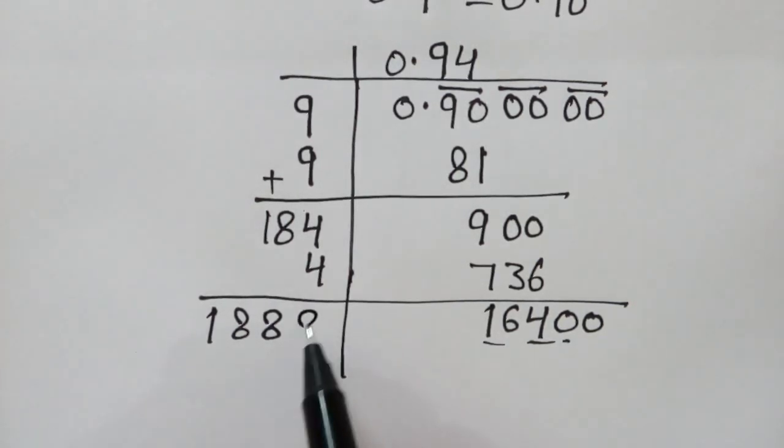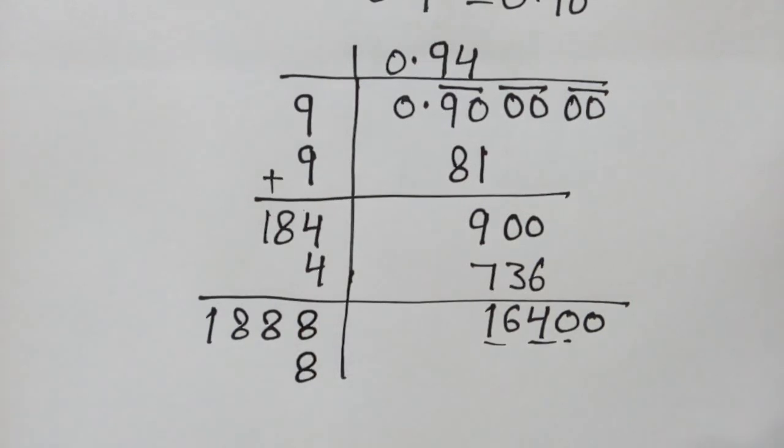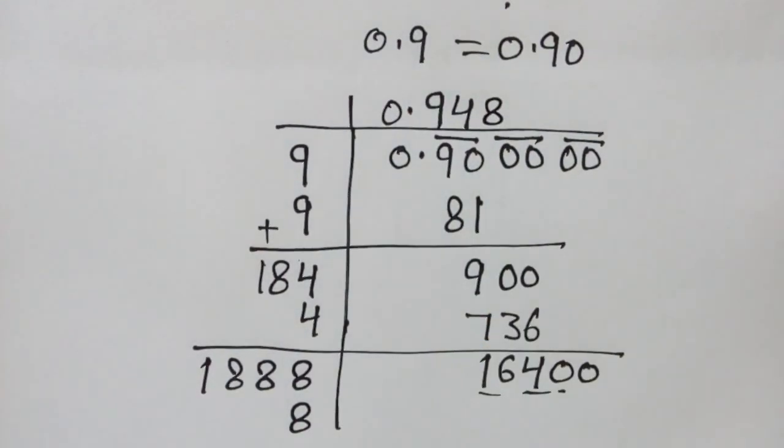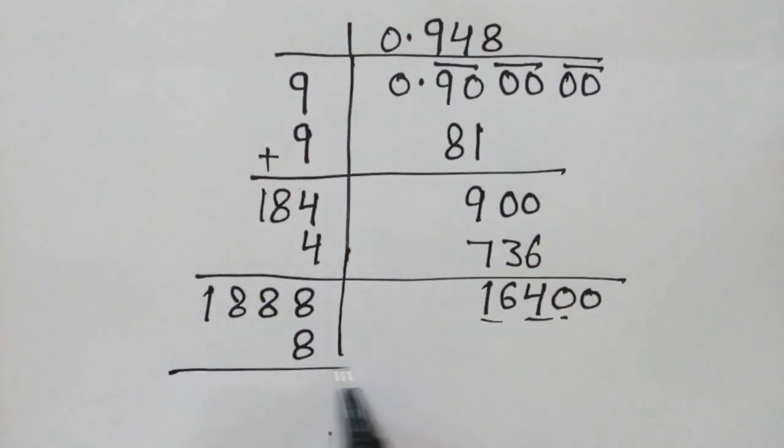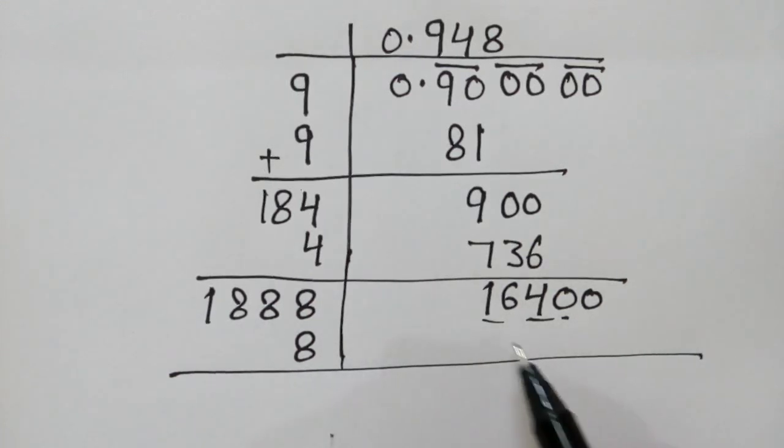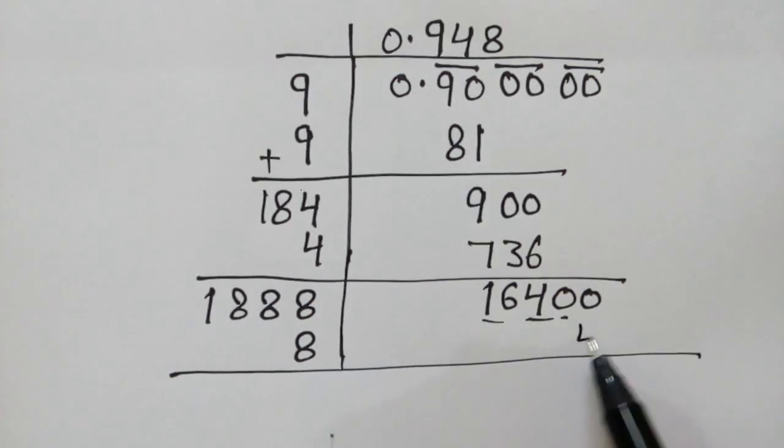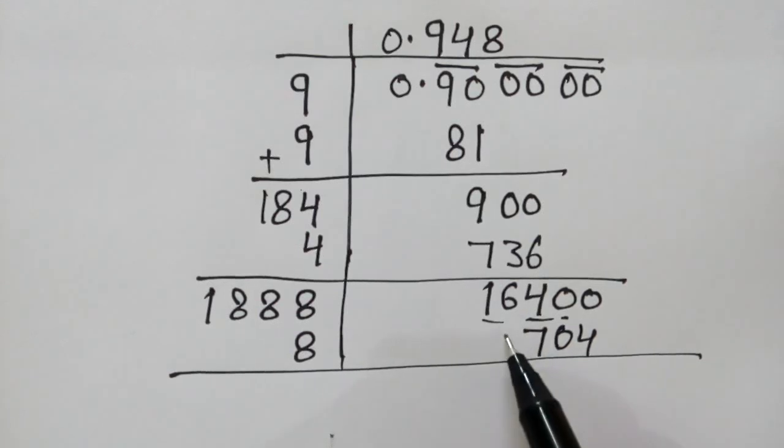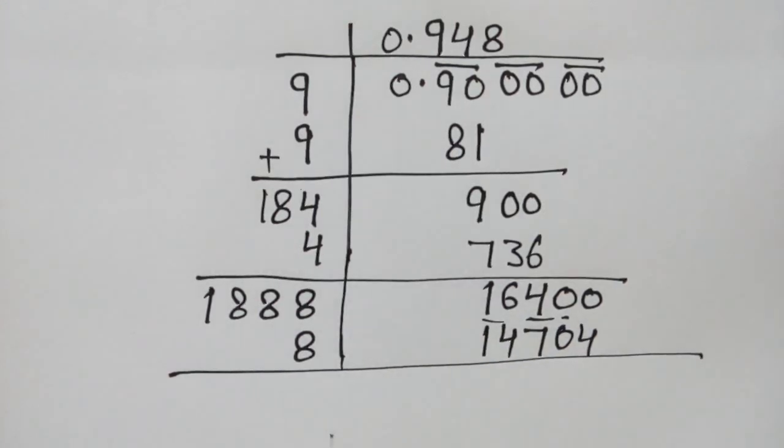This will be 8 times. 8 and 8. Now this will be multiplied by this 8. We get 14704.